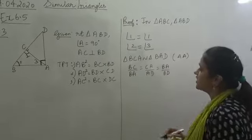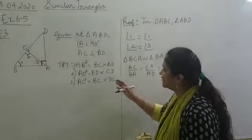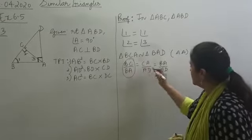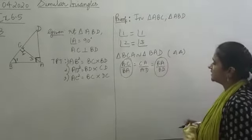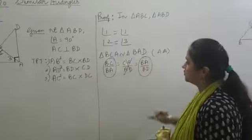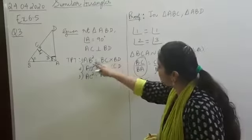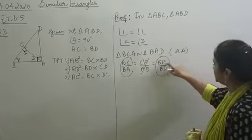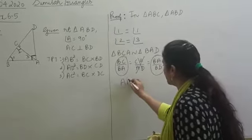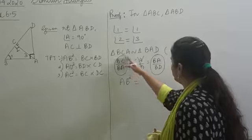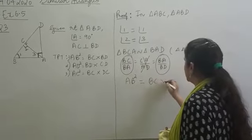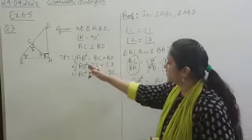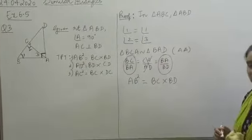Next, we need to identify AB in the ratios. This ratio has AB in it, and this ratio also has AB in it, so we ignore the third ratio. Cross-multiplying these two ratios gives us AB² equals BC into BD. That is exactly what we had to prove — AB² equals BC into BD.